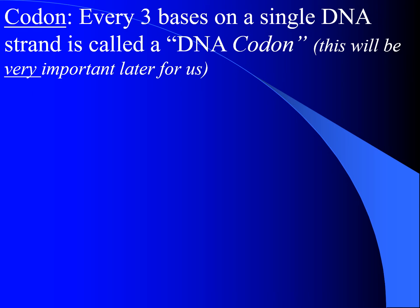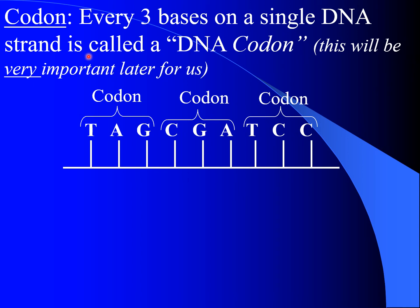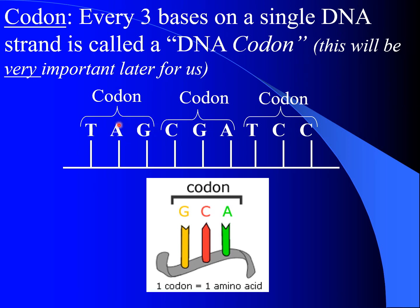A new term you need to know is codon. You should associate codon with the number three — always think of the number three. Specifically, it means three bases on a single DNA strand in sequential order. So they have to go in sequence — this is what we call a DNA codon. On a single side, not going across or jumping across the double strand: for instance, TAG here would be the first codon, CGA would be the second codon, and TCC would be the third codon. This will become very important for how we understand DNA to work in cells.